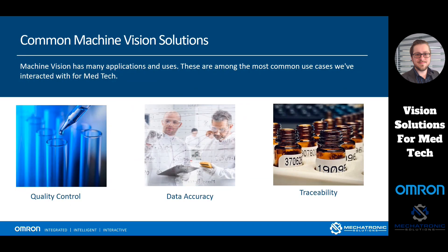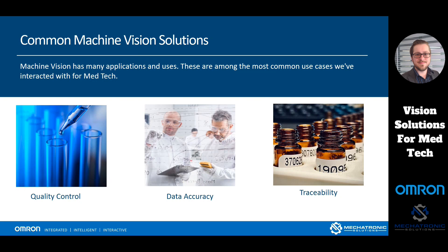What are some common machine vision solutions today? There are tons of them. Three of the big ones we want to focus on are quality control, data accuracy, and traceability. When we talk about traceability for machine vision, we're mostly talking about barcode reading, label verification, and that sort of thing.